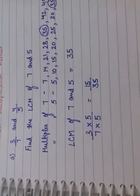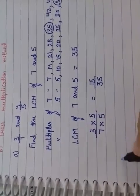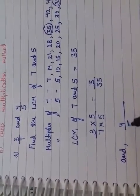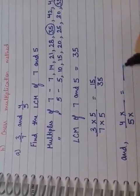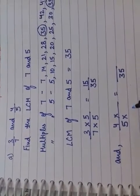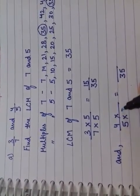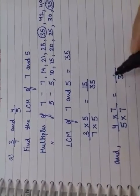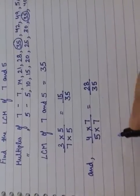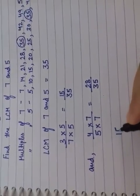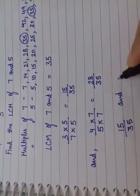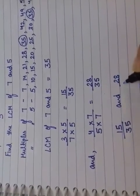And the second one, that is 4 by 5. Then again we have denominator 35. So how do we convert 5 into 35? 5 multiplied by 7. Here also 7. 4 7s are 28. So one fraction is 15 by 35, and the other fraction is 28 by 35.